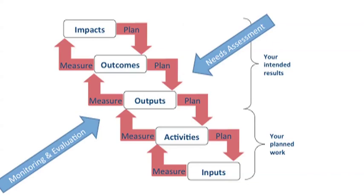There are also outputs, which are the direct results of the things that we do within our institutions. So if you're a learning designer, an output could be a delivered training course. The outcome would then be that people have the knowledge and skills to do the jobs that they've been hired to do. And the impact would be whatever value that your organization is adding to the society and community in which it works. These are three levels of results that we typically talk about.